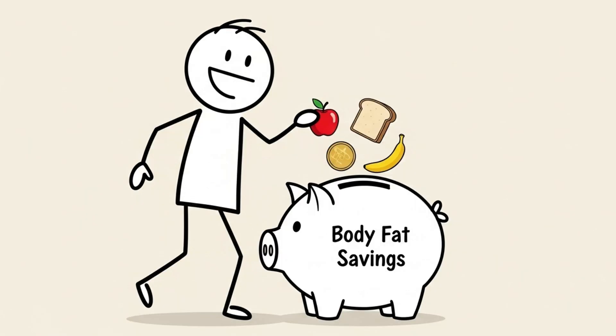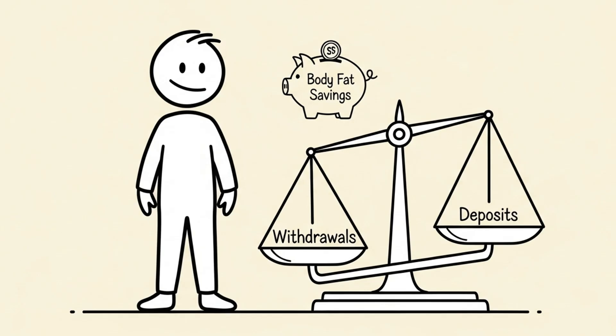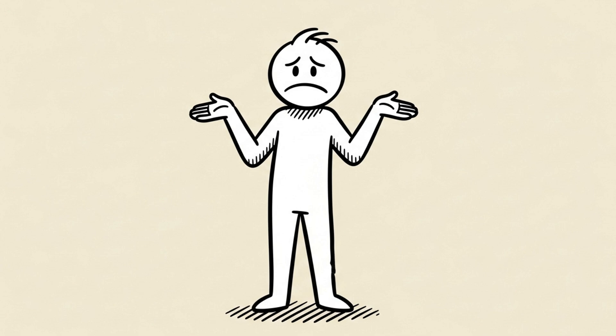Think of your body fat as a savings account of stored energy. Calories in, food, are your deposits. Calories out, TDEE, are your withdrawals. This is the energy you burn just by living, breathing, moving, and exercising. To reduce the balance in that savings account, your body fat, your withdrawals must be greater than your deposits. There is no other way.